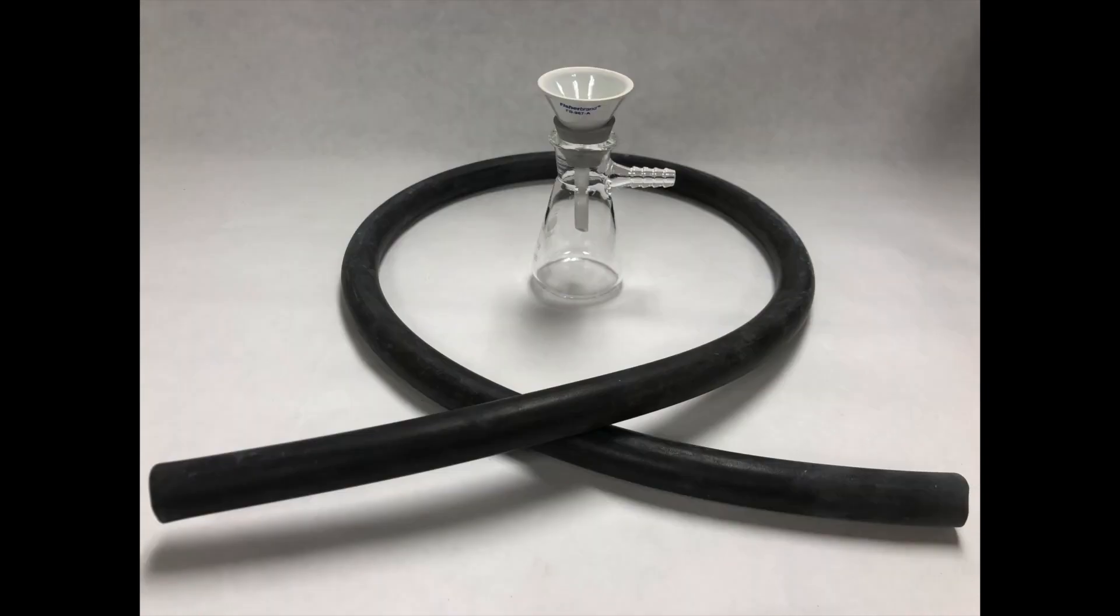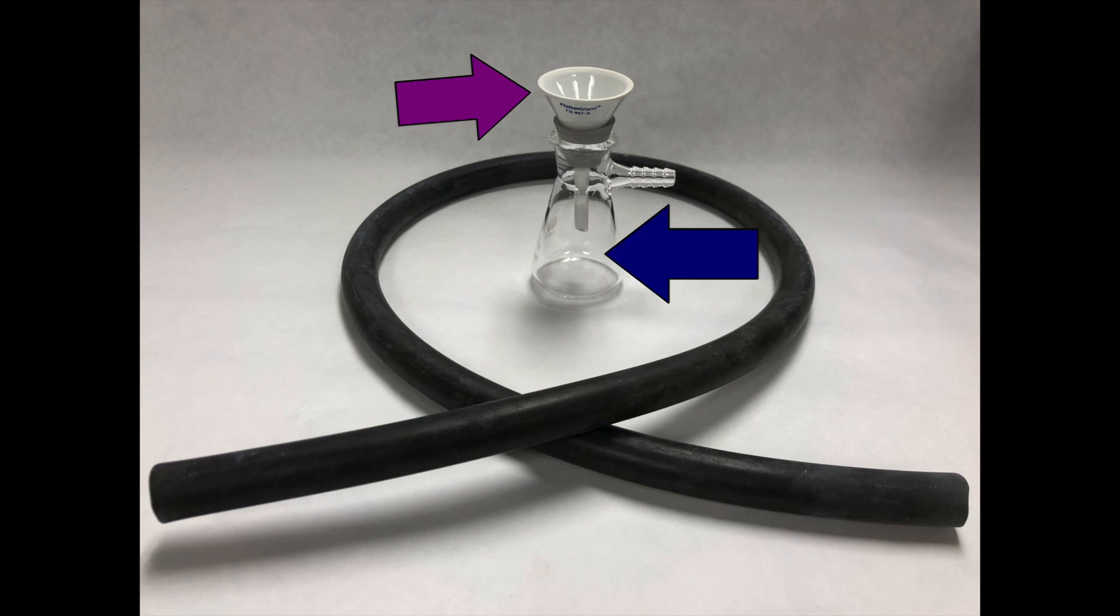Your vacuum filtration system is made up of three main parts: the Hirsch funnel on top, the 50 milliliter filter flask which holds your filtrate, and the vacuum hose.